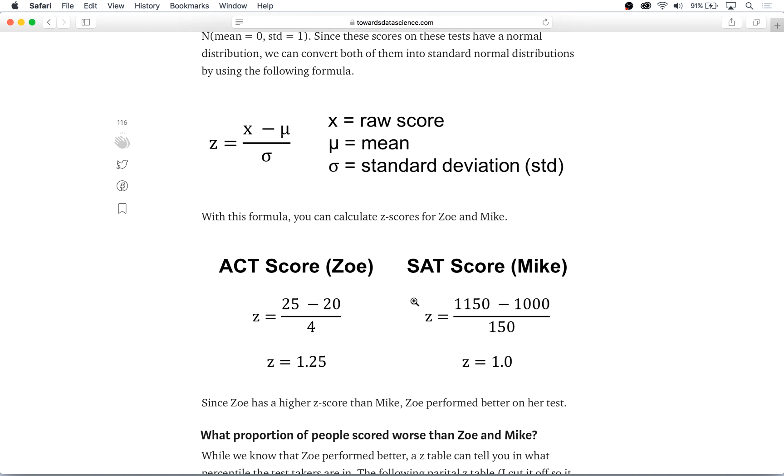We can also do a calculation for Mike and it's the same thing and this leads to Mike having a z-score of 1.0. Since Zoe has a higher z-score than Mike we can conclude that Zoe performed better on her test.